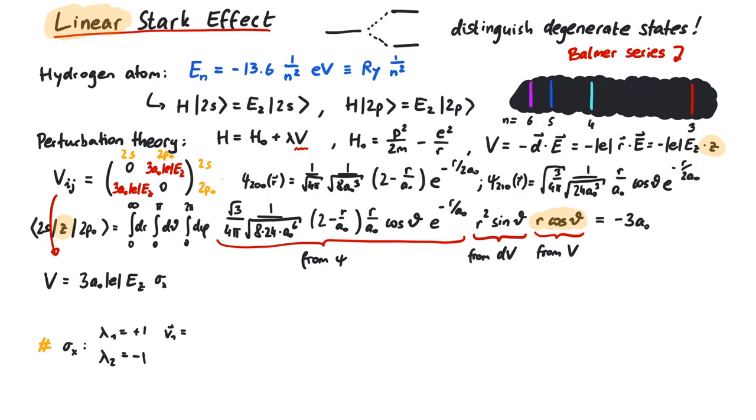The eigenvalues of the Pauli matrices are plus and minus 1. So the eigenvalues of this matrix are plus and minus 3a ee.